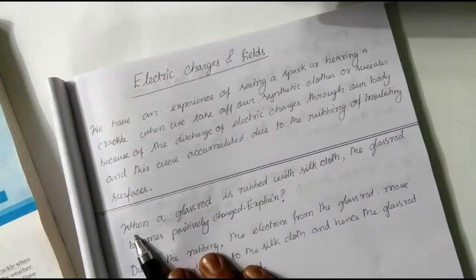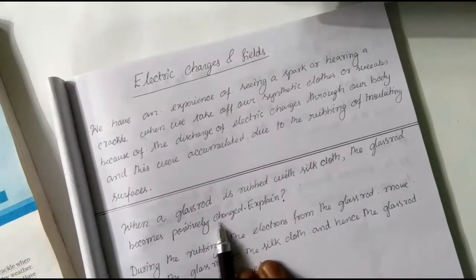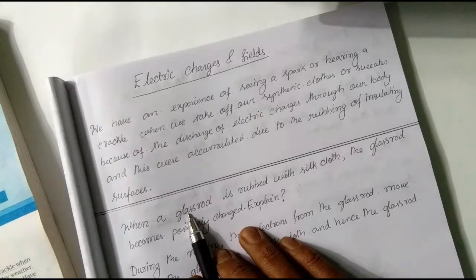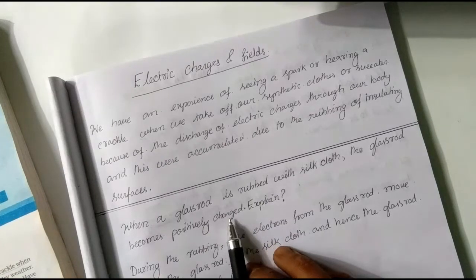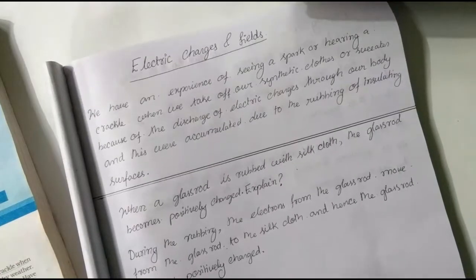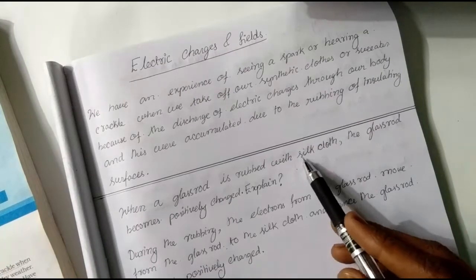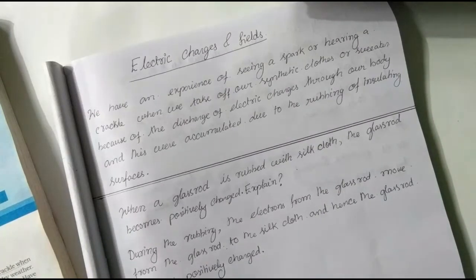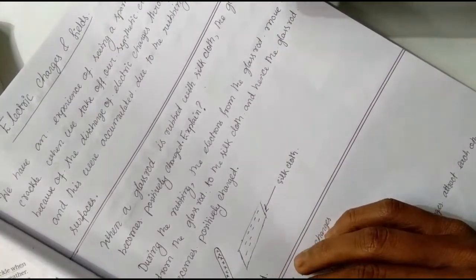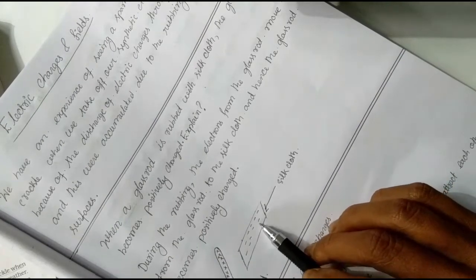Next question: When a glass rod is rubbed with a silk cloth, the glass rod becomes positively charged. Explain why the glass rod becomes positively charged. When I rub a glass rod with silk cloth, the glass rod becomes positively charged and the silk cloth becomes negatively charged. Why does this happen?